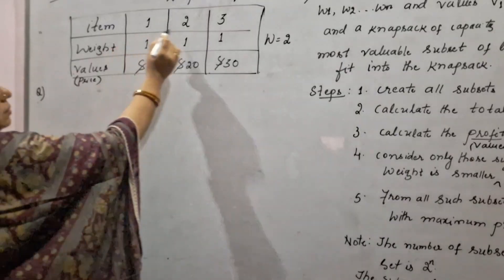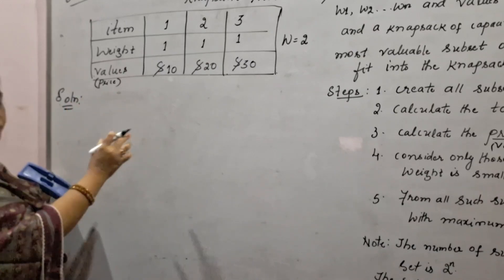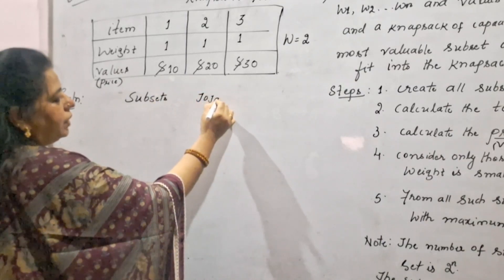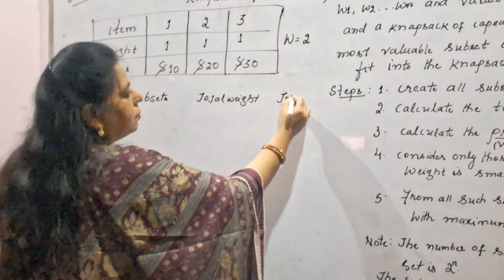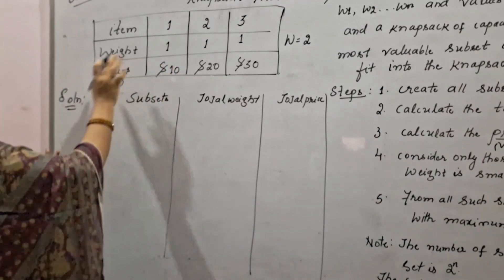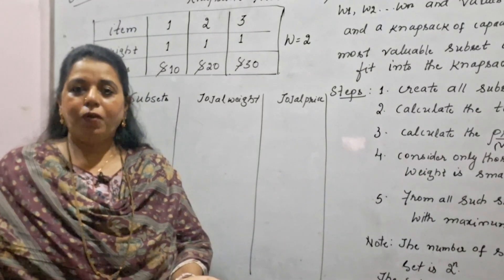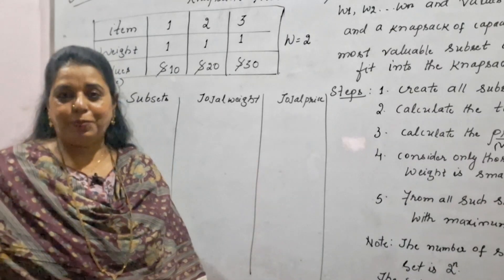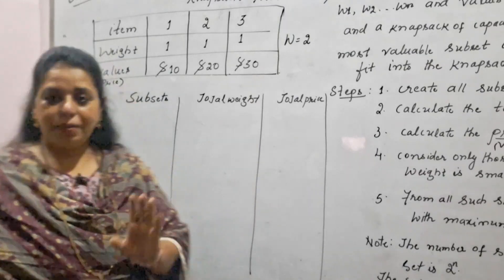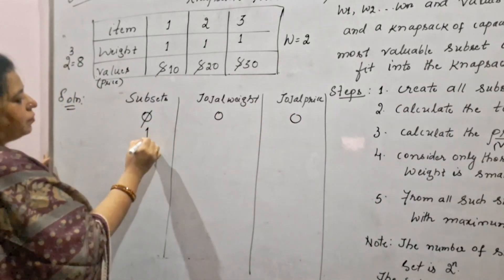Here items are 1, 2, 3 with weights 1 kg each and values $10, $20, $30. To proceed towards the solution, create three columns: subsets, total weight, and total price. With three items, 2 to the power of 3 equals 8 subsets are possible. With 4 items, 16 subsets are needed. The first subset is the null set, with total weight 0 and total price 0.